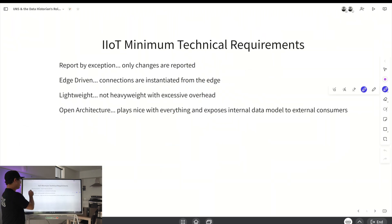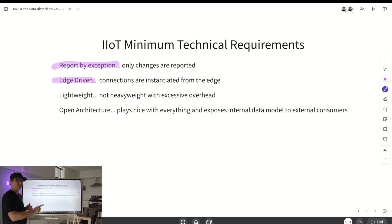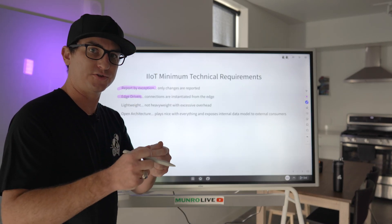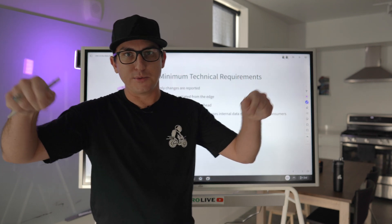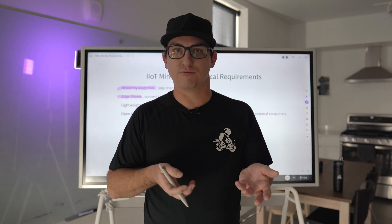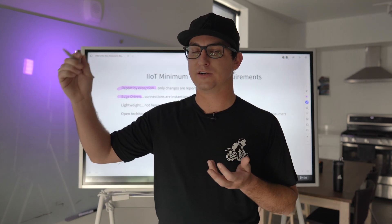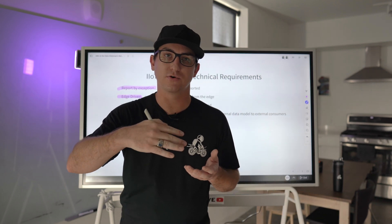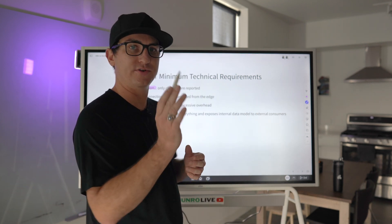The IoT minimum technical requirements are: report by exception — only changes in the data are reported, as opposed to poll response. Edge-driven — connections are instantiated from the edge. This is important for scalability: you're not going to the server to configure your new historian tag like you would with, say, a Wonderware historian. That's server-centric, as opposed to edge-driven.